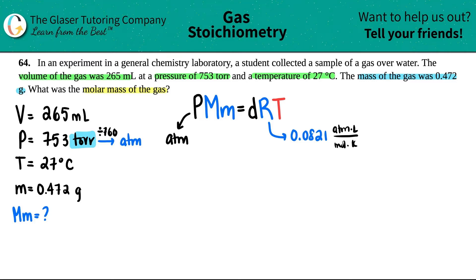So I'm going to take the 753 and divide it by 760, and I'm going to try not to round too much because this is not the answer. So 0.99079, and that's my atm value.